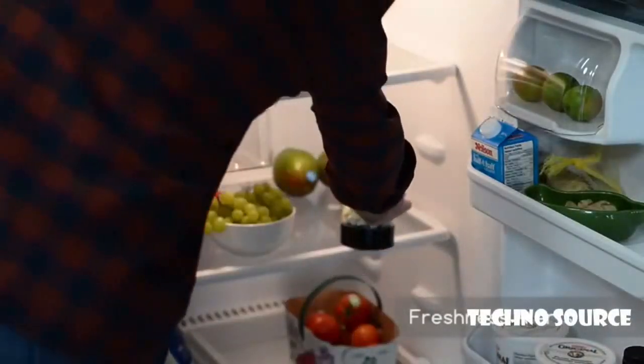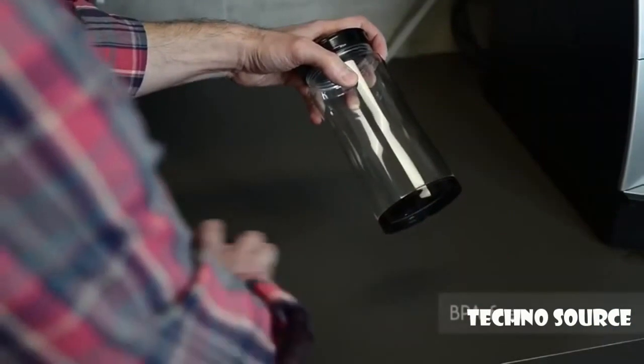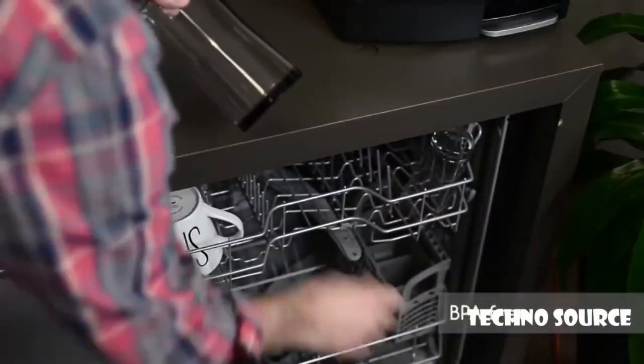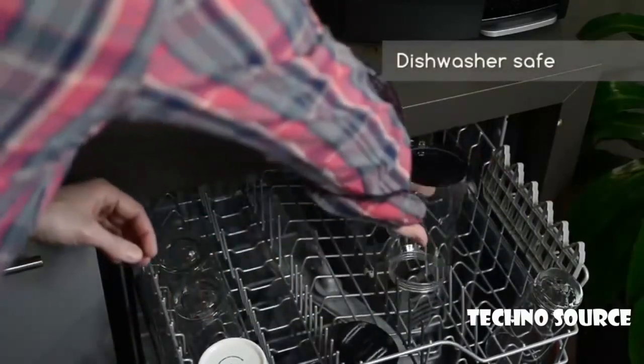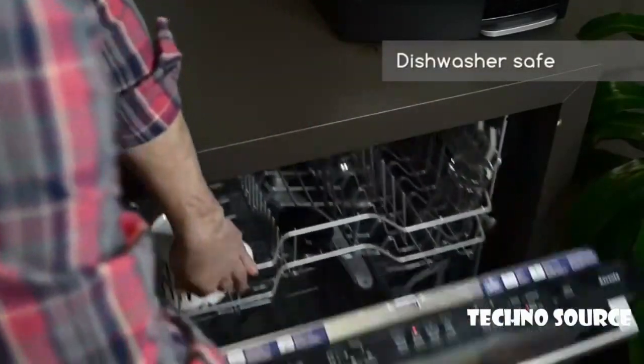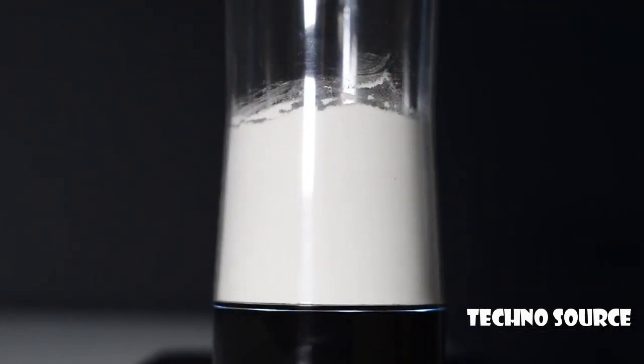Neo also keeps track of best-before dates so you never have to guess or compromise on the freshness. Neo is engineered with BPA-free plastic, so it's really food safe. It has an airtight lid, works in the fridge, goes into the dishwasher, and charges wirelessly.